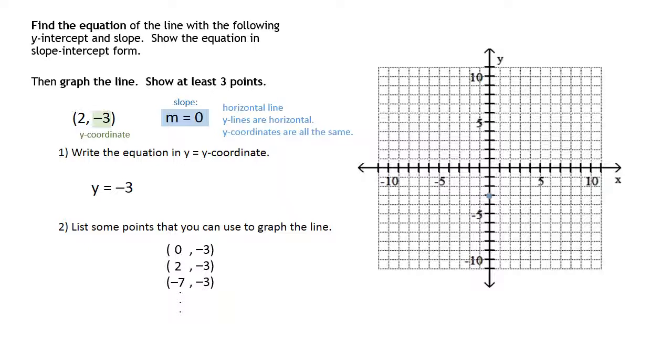(0, -3) is origin down 3. (2, -3) is right 2 down 3. And (-7, -3) is left 7 down 3. And then you would draw the line. It's horizontal. It's flat. The slope is 0. And all the y-coordinates are the same.